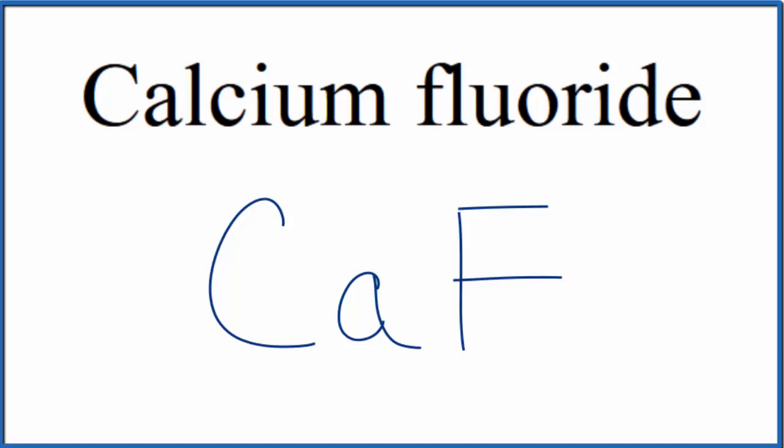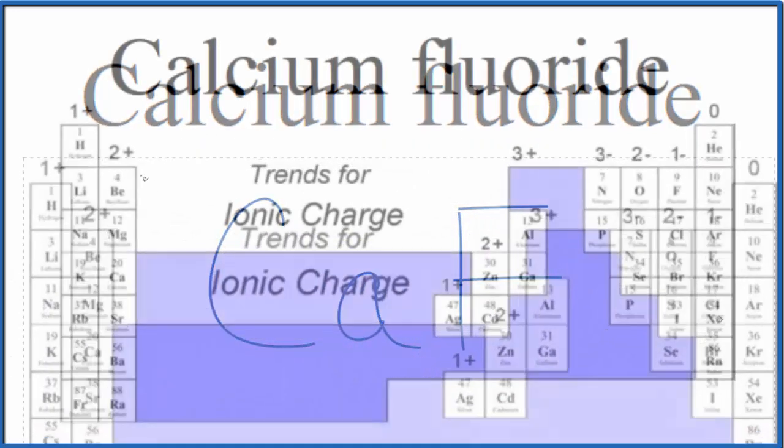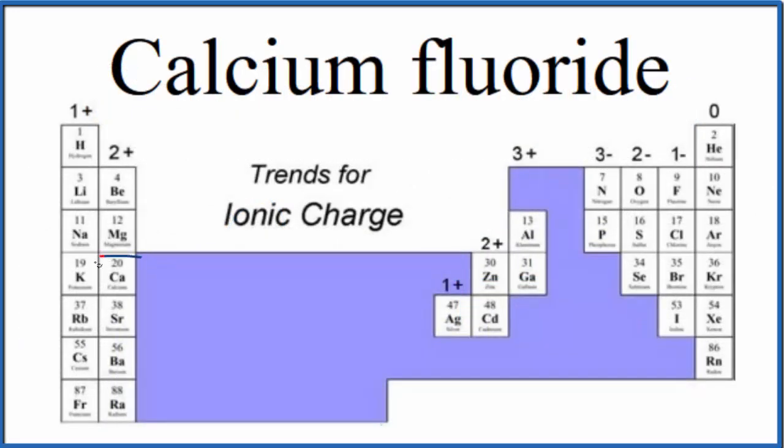Let's take a look at the periodic table organized by charge. Calcium is right here in group 2, so the elements in group 2 will have a 2 plus ionic charge.